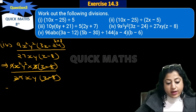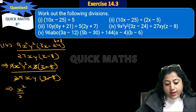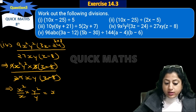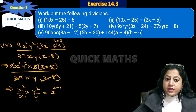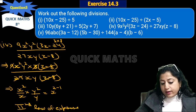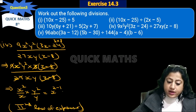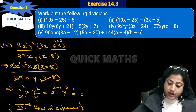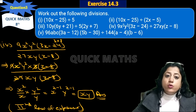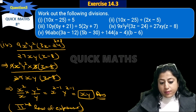What remains is x²y² over xy. We apply the law of exponents for division: x² divided by x = x^(2-1) = x¹, and y² divided by y = y^(2-1) = y¹. So the answer is xy. This is the second law of exponents — when the base is the same and we divide, we subtract the powers. That completes the fourth part.